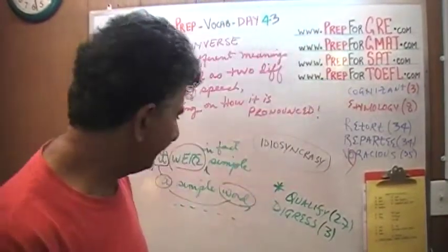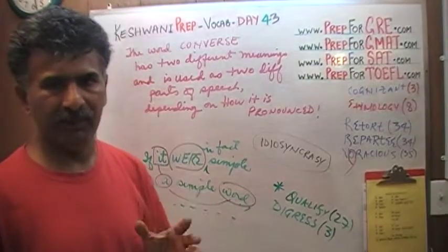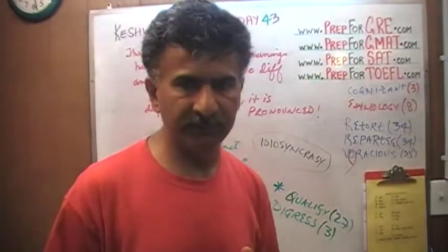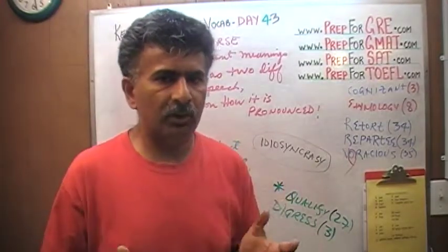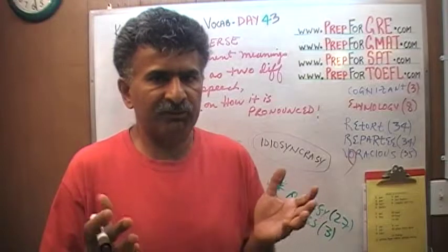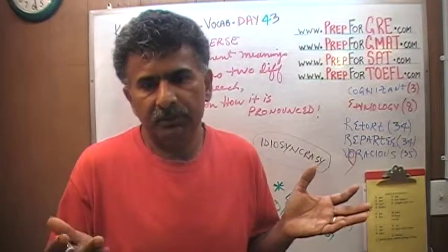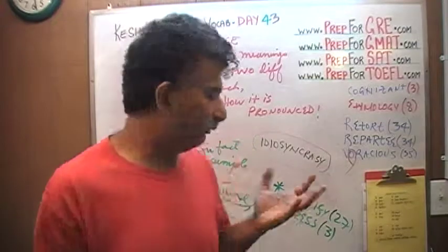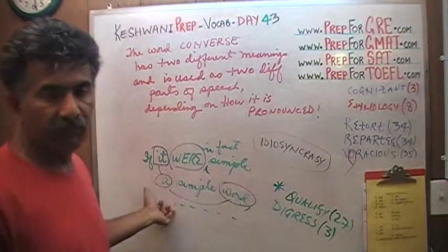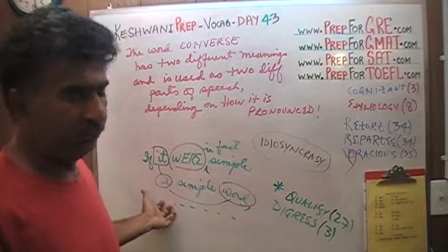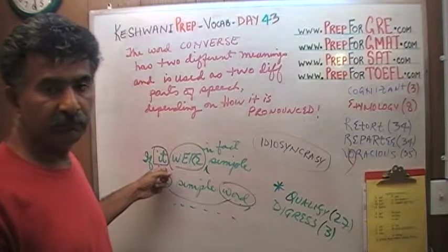Idiosyncrasy is an oddity. Something peculiar, something odd, something quirky about something. It has eccentricity. There are some rules which seem to have no rhyme or reason. This is one of those idiosyncrasies. The English language requires that when one is speaking hypothetically, one has to employ a plural verb, even if the subject of the sentence is singular.